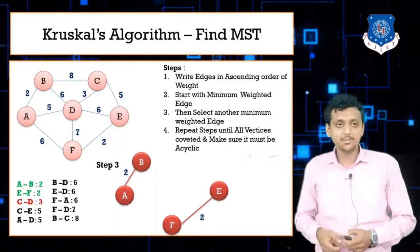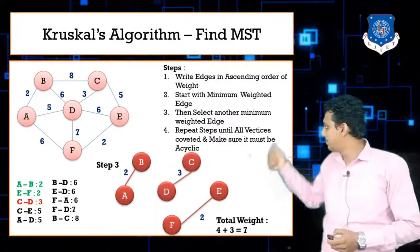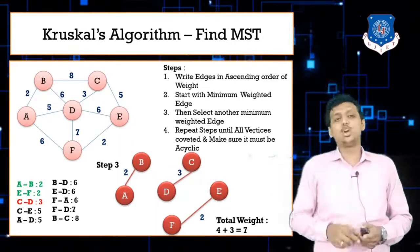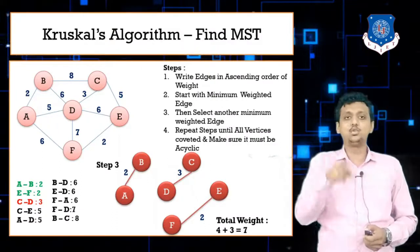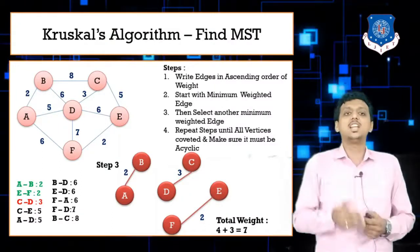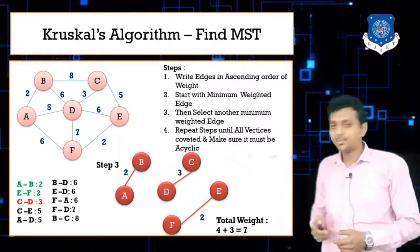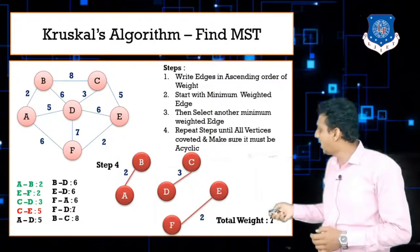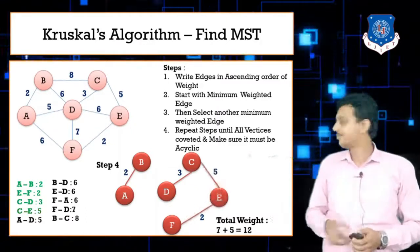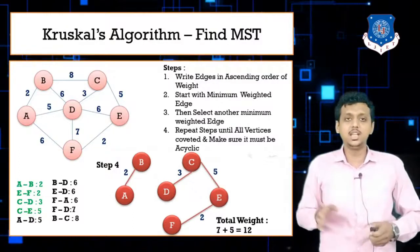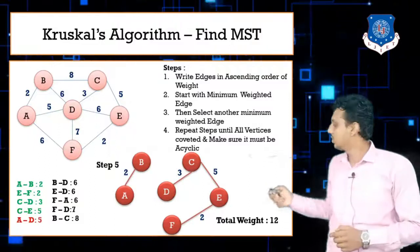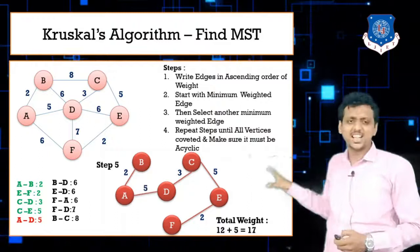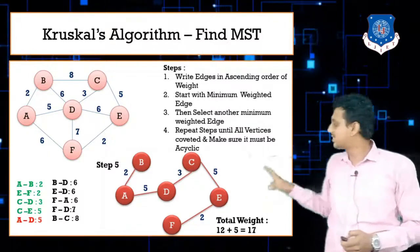Whenever you select an edge, make sure it does not form a cycle. If an edge forms a cycle, just ignore it and take the next edge. Next we select CE with weight 5, connecting C and E. Then we select AD. Now all nodes are connected with minimum weight, and the total weight is 17.